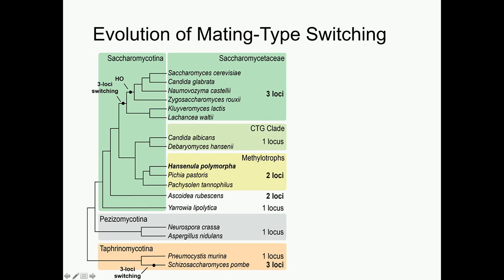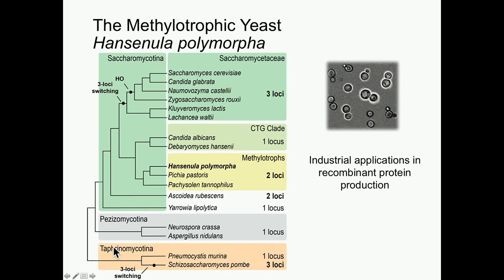The work I've been doing has focused on a clade of methylotrophic yeast, highlighted here in yellow. They're a sister clade to the CTG clade, which contains Candida albicans and other pathogenic yeast species. The species I focus on particularly is Hansenula polymorpha, which is an industrially relevant strain very useful for recombinant protein production.